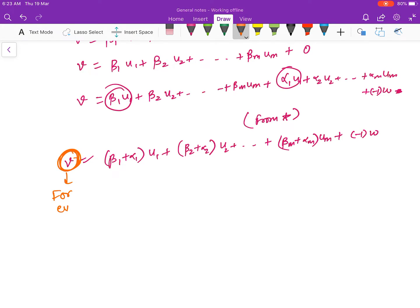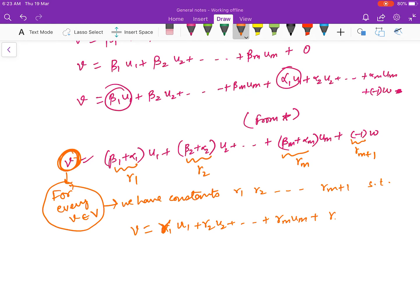For every v in V, we have constants or scalars γ1, γ2, ..., γm, γm+1 such that v = γ1·u1 + γ2·u2 + ... + γm·um + γm+1·w. It means that {u1, u2, ..., um, w} is a spanning set.